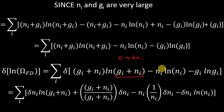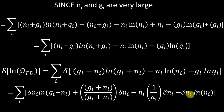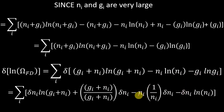Now for the minus term: first function times derivative of second gives 1/n_i times d(n_i) from the chain rule. For the second function times derivative of first, since g_i is not subject to variation, that derivative is zero. So now these two terms cancel each other, these two also cancel, and the plus d(n_i) and minus d(n_i) terms also cancel, leaving us with only two terms.